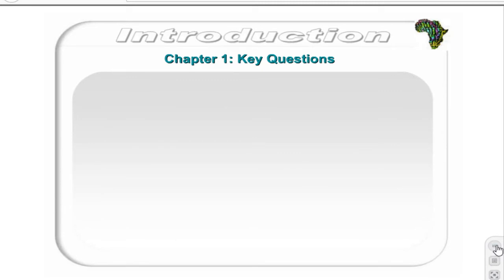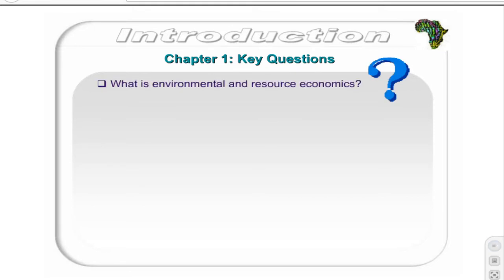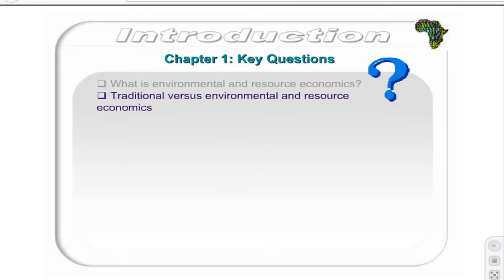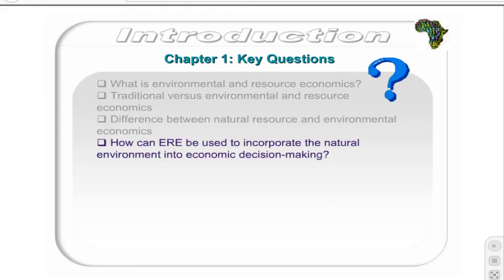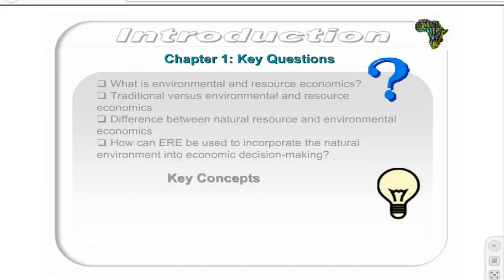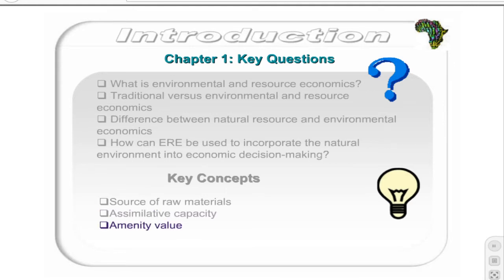The key questions that will be addressed are: what is environmental and resource economics? What are the differences between traditional and ERE? What are the differences between natural resource and environmental economics? How can ERE be used to incorporate the natural environment into economic decision making? The key concepts discussed are the environment as a source of raw materials, assimilative capacity, and amenity value. These concepts should be added to your glossary.